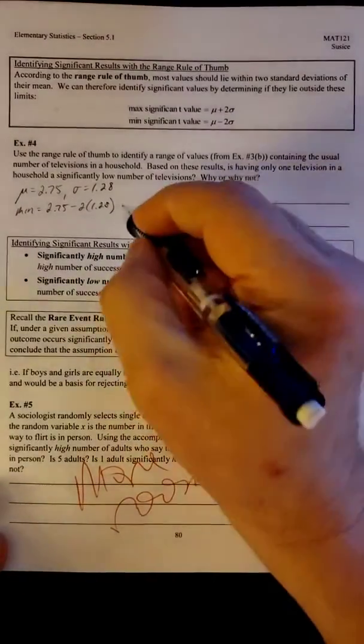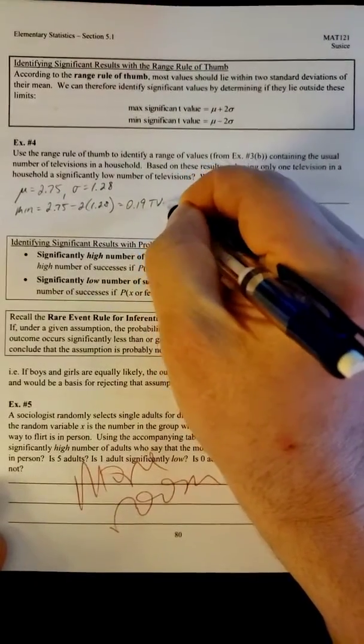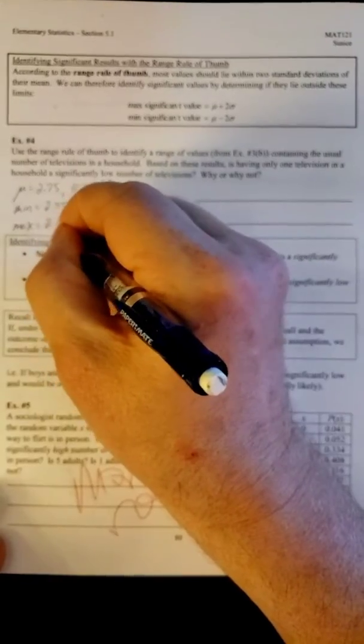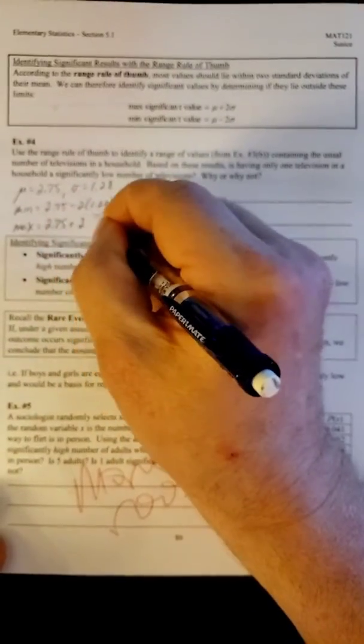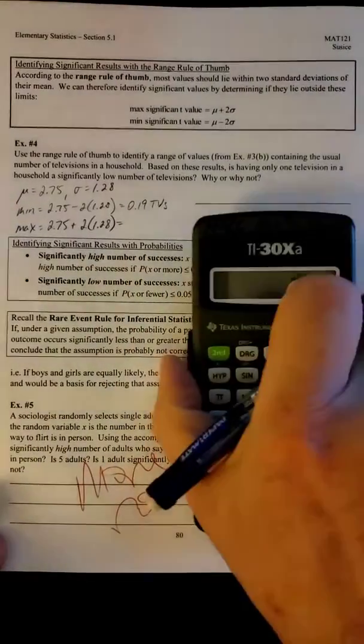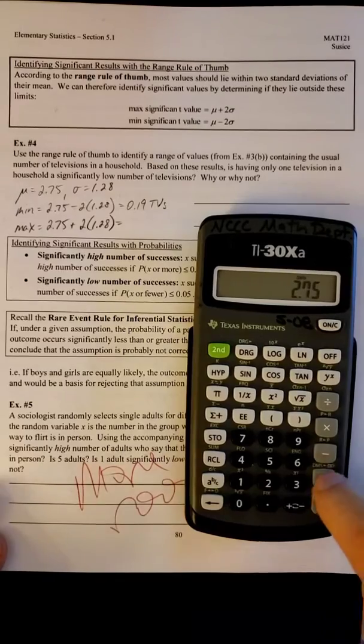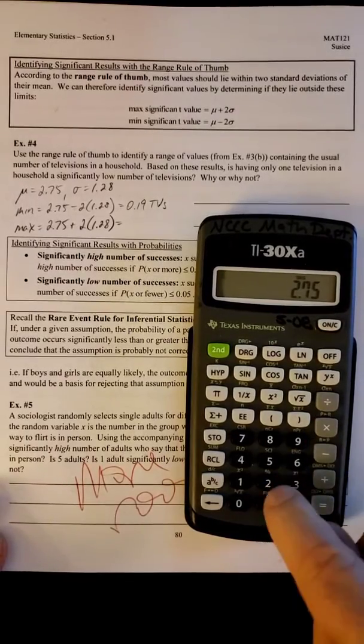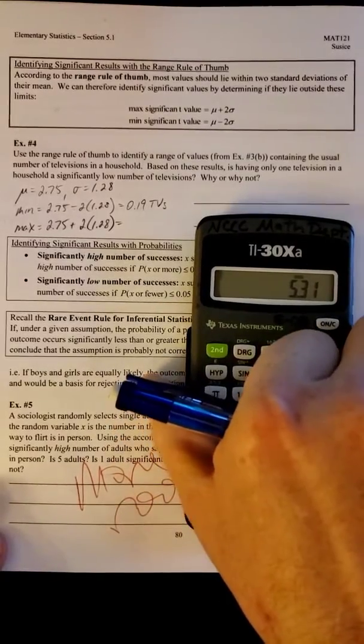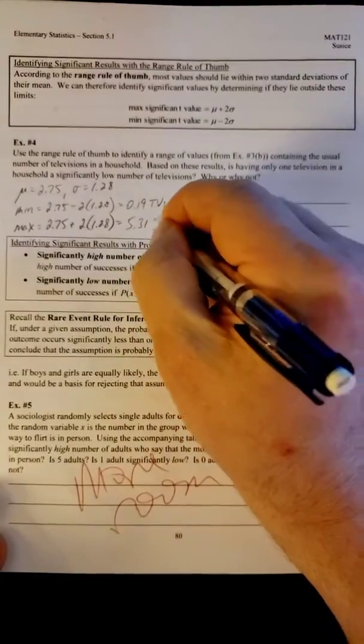So 0.19 TVs, that would be the minimum, and then the max. So let's see what we get. 2.75 plus 2.56. 5.31. So 5.31 TVs.